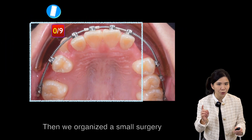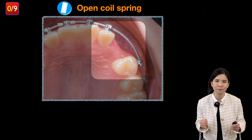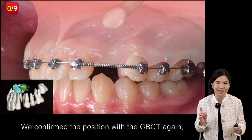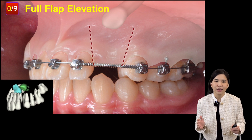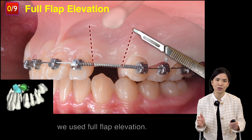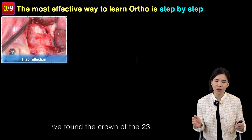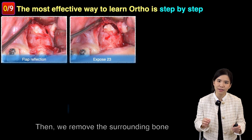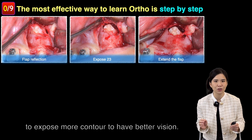We then organized a small surgery to address tooth 23 first. We confirmed the position with cone-beam CT again, then made a flap to locate the canine. In this case, full flap elevation was used, and after flap reflection, we found the crown of tooth 23. We then removed the surrounding bone to expose more contour for better vision.